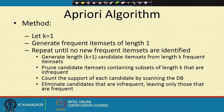Welcome to the third lecture on Association Rule Mining. We have seen the a priori algorithm. What we do in the a priori algorithm is to reduce the number of candidate item sets using the a priori principle.